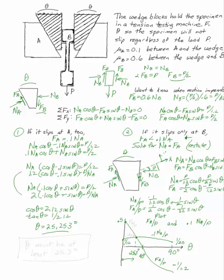In fact FA has got to be bigger than 0.1 times NA. Because this is the FA over P line and this is the 0.1 NA over P line. And clearly FA over P is bigger than 0.1 times NA over P. Which is impossible because that means it slips. So we can say it must slip at A too and the answer to my question is theta must be at least 25.3 degrees.